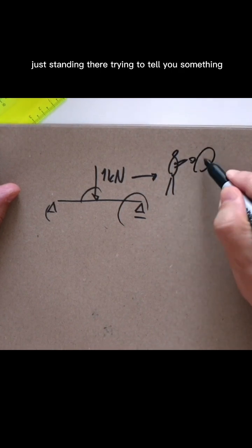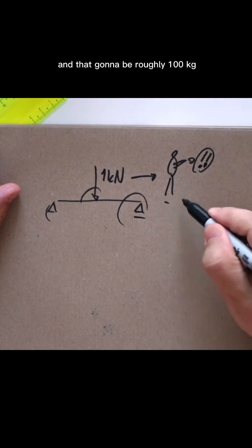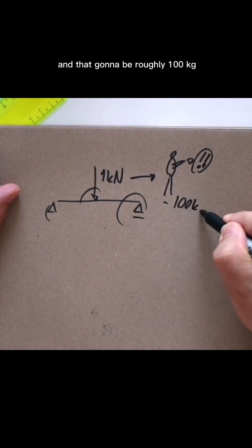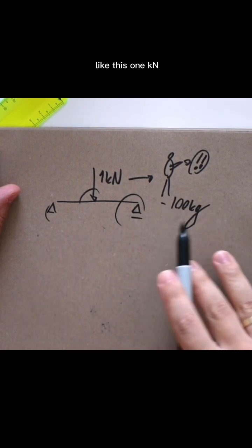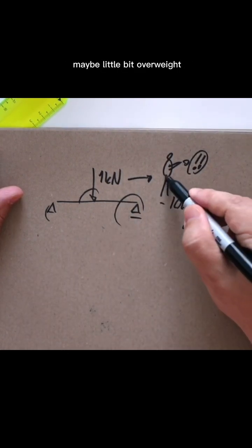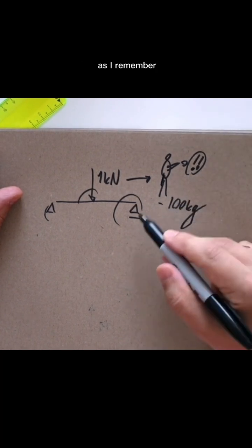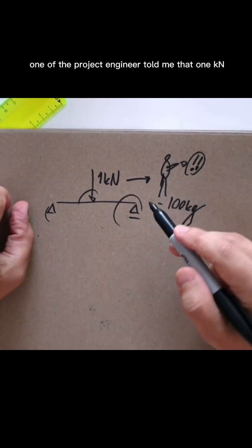And that's going to be roughly 100 kg. That's how I want you to remember this. I want your imagination to work like this: one kilonewton going to be an adult man maybe a little bit overweight. As I remember one of the project engineers told me that one kilonewton is one kg, that's unacceptable guys.